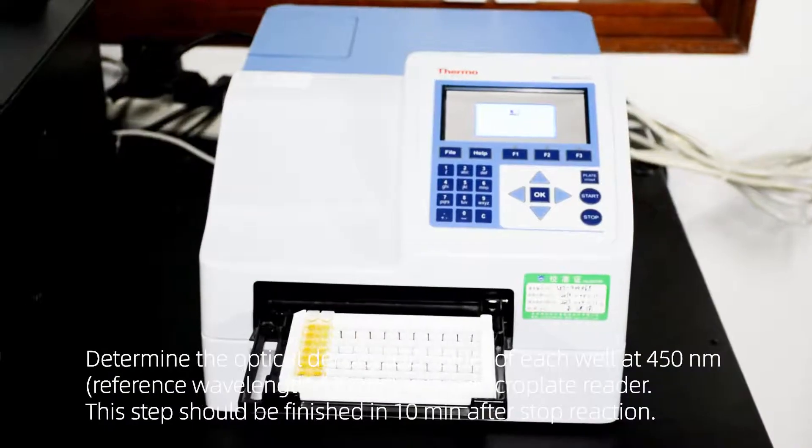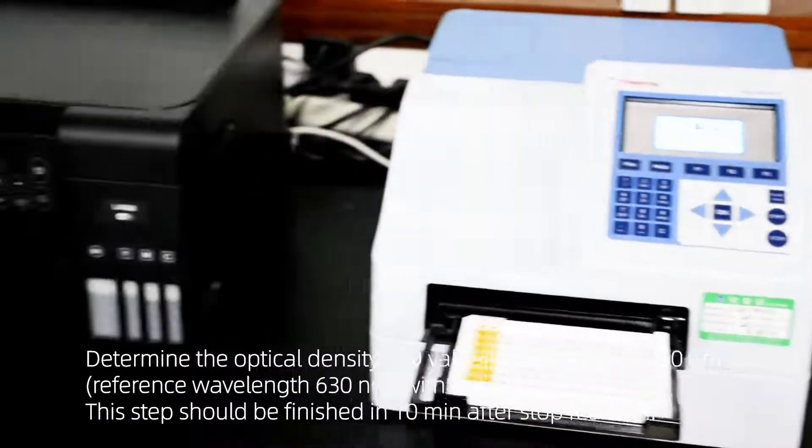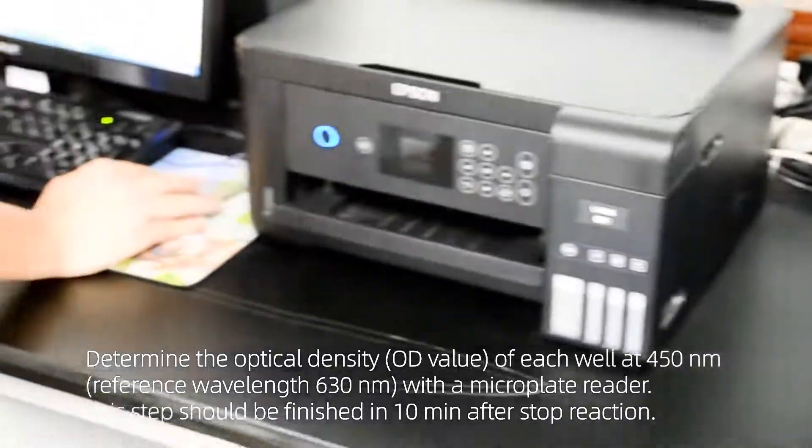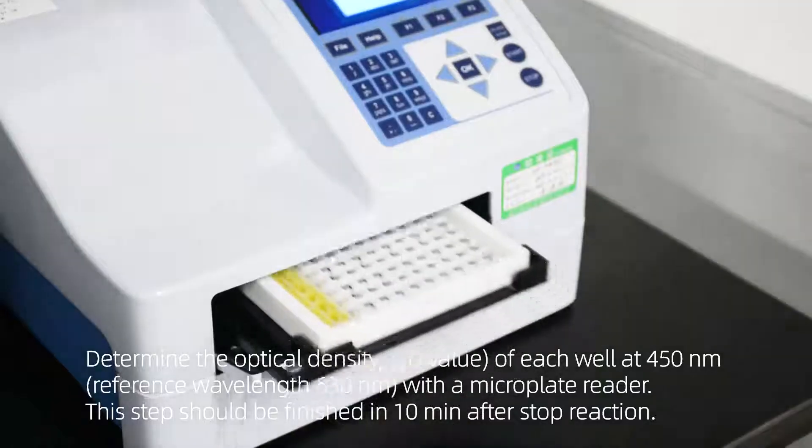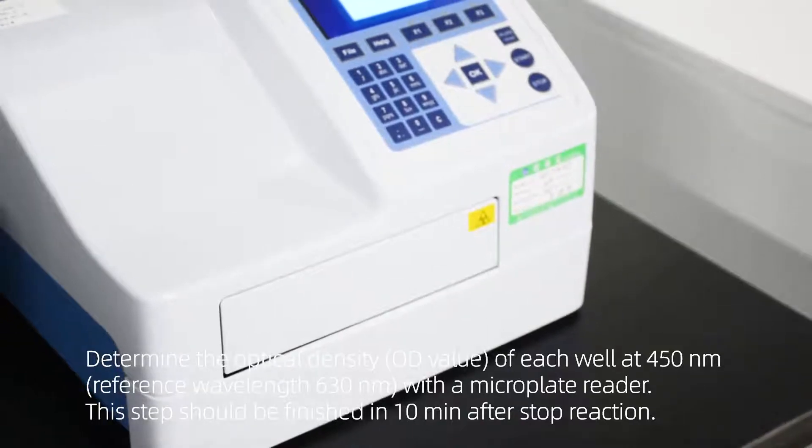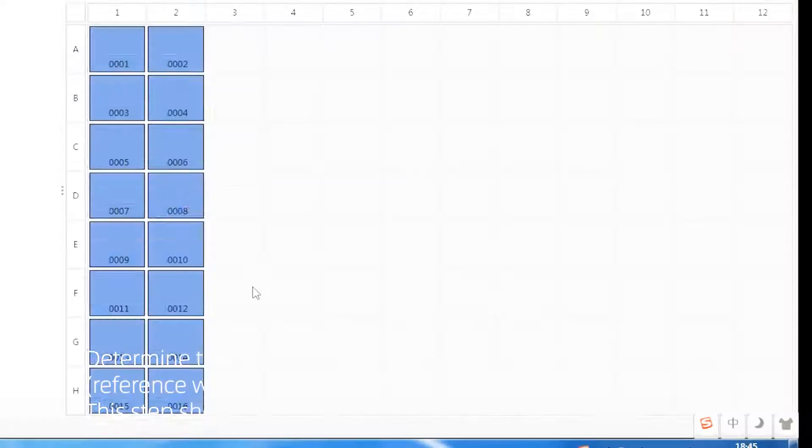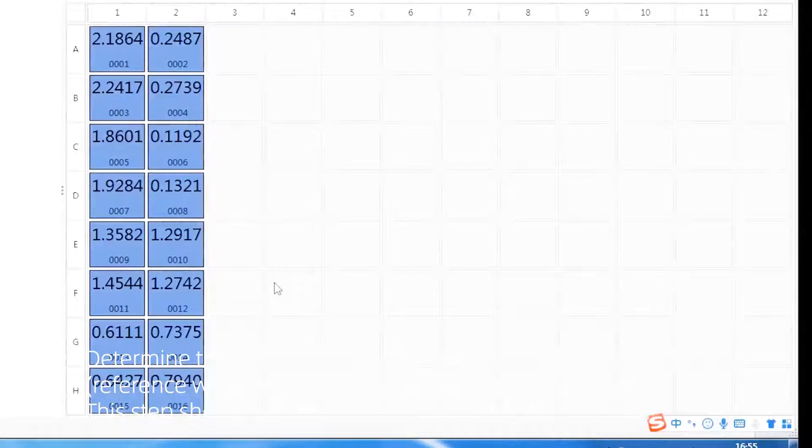Determine the optical density or OD value of each well at 450 nanometers, reference wavelength 630 nanometers, with a microplate reader. This step should be finished within 10 minutes after stopping the reaction.